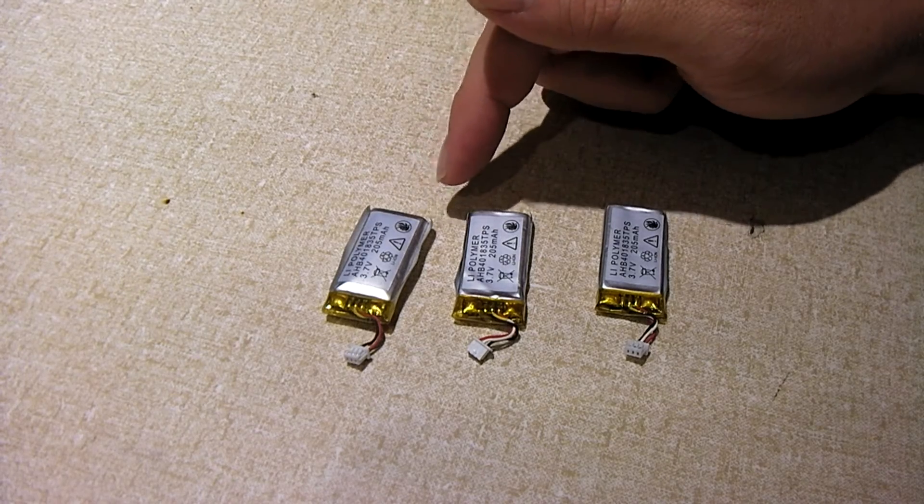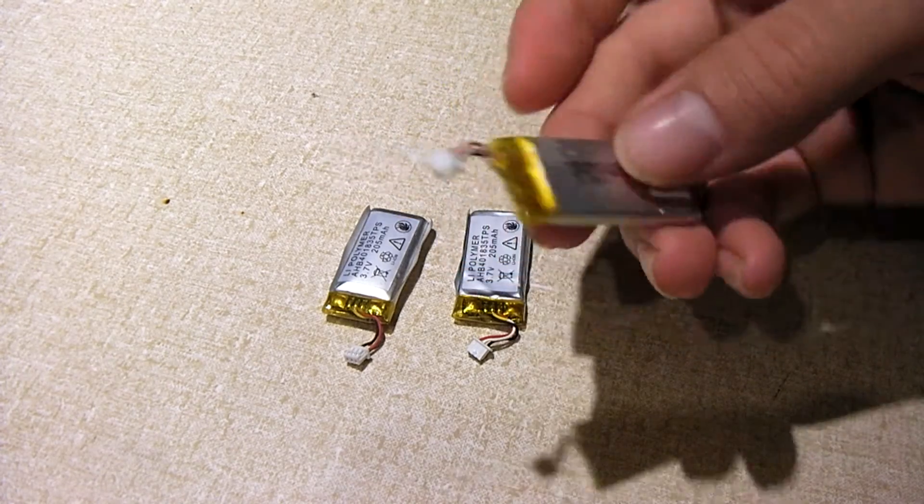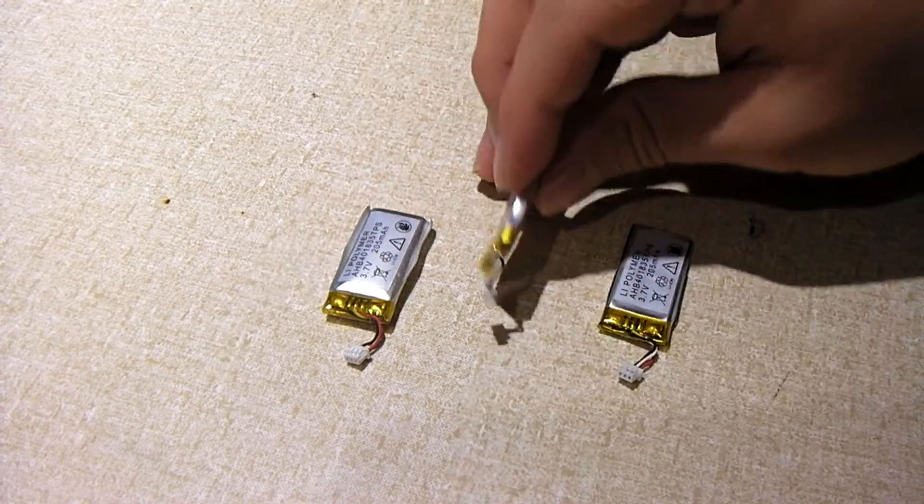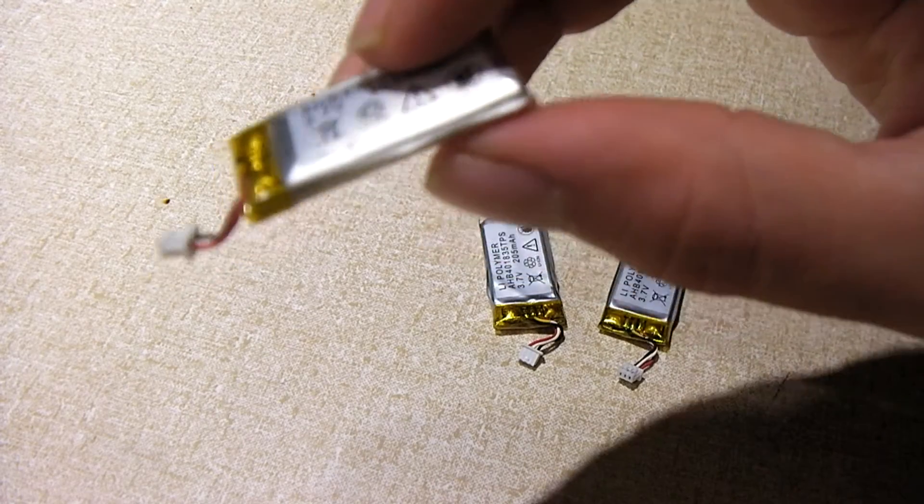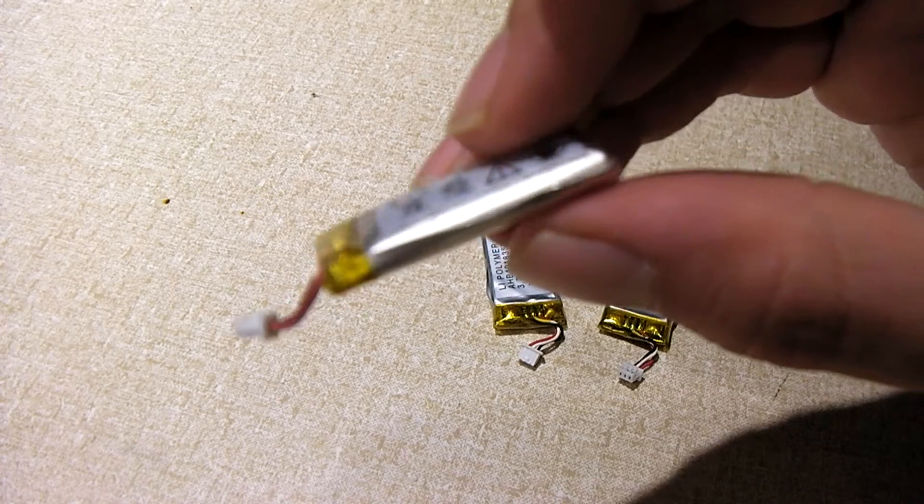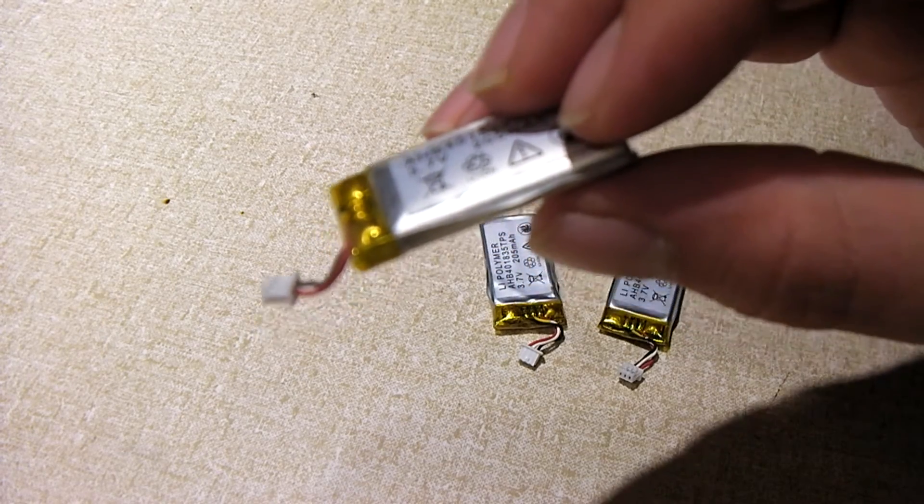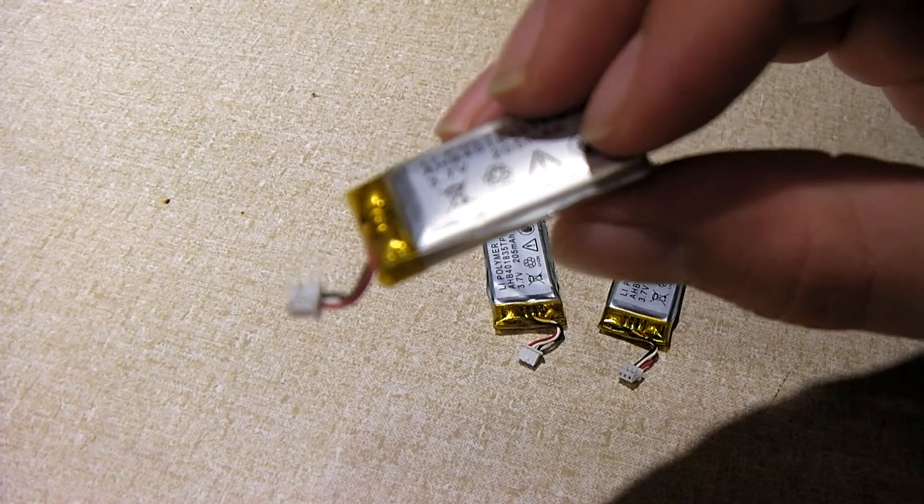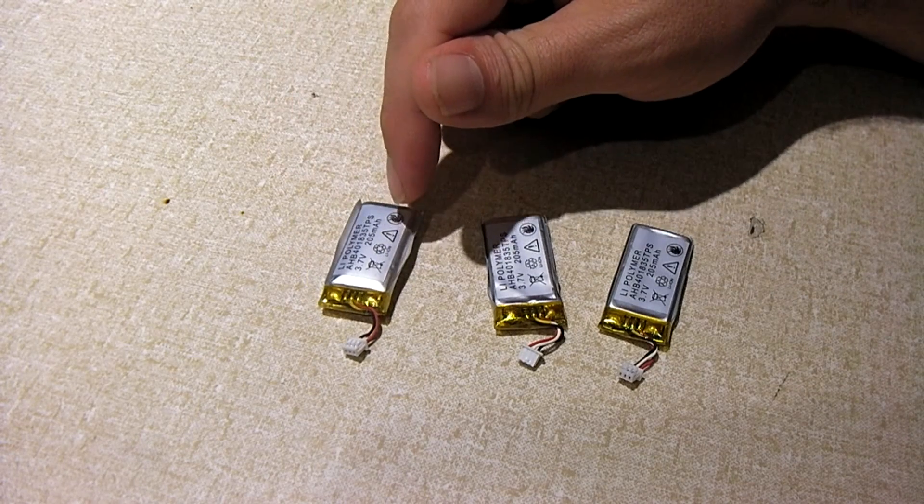Notice how this one is really swollen up. This one here is flat. This one here is flat. However, this one looks almost like a little balloon. No, I didn't short this thing out. No, I didn't do anything crazy with it. When I got these batteries, they were all flat, just like the other two here. This one did not used to be like this.